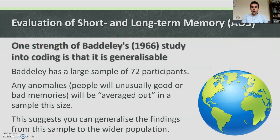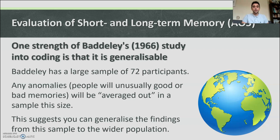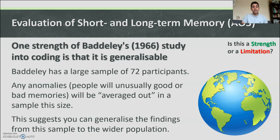One strength of Baddeley's study into coding is that it is generalizable. Baddeley had a large sample of 72 participants. Any anomalies — people with unusually good or bad memories — will be averaged out in a sample size of 72. This suggests you can generalize the findings from this sample to the wider population. This is a strength.